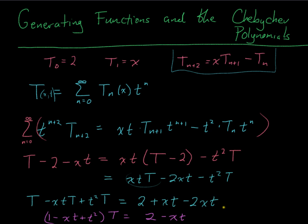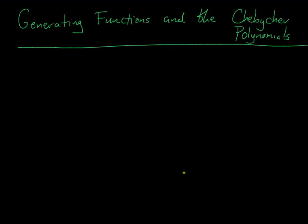I wish I had a little bit more space, but I don't, so I get, T is actually (2-xt) over (1-xt+t²). So that is the generating function for Chebyshev. So again, this is... sorry, t².